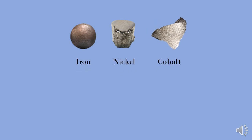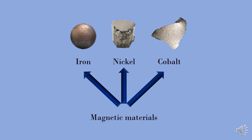Here we have three materials — iron, nickel, and cobalt — which are magnetic. These three materials are the ones from which we can make permanent magnets. You can also use different combinations of materials, called alloys, to make magnets.